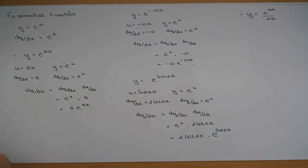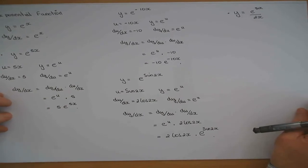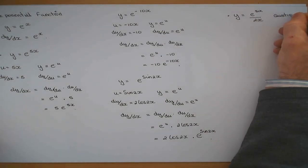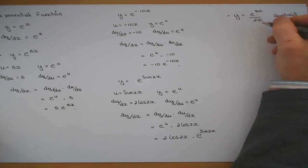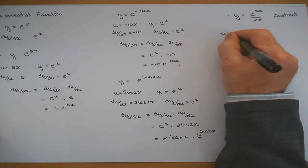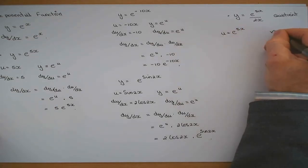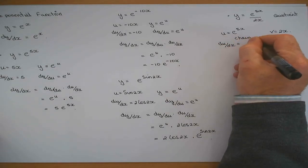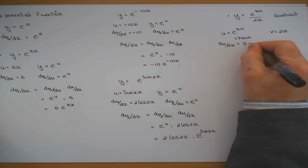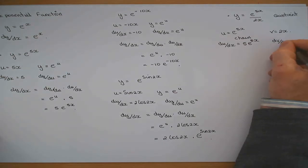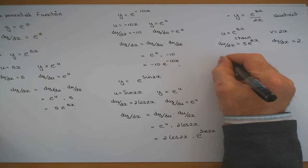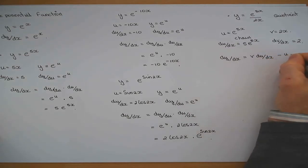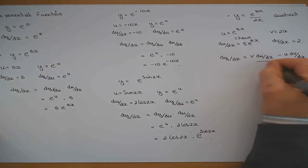If y is equal to e to the 5x over 2x, what have I now got? I have a quotient — a function in x divided by a separate function in x. So u is equal to e to the 5x, and v is equal to 2x. du/dx: differentiating e to the 5x by chain rule gives 5e to the 5x. And dv/dx: differentiating 2x gives 2. Then dy/dx is v du/dx minus u dv/dx, all over v squared.